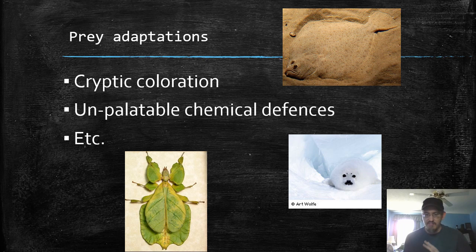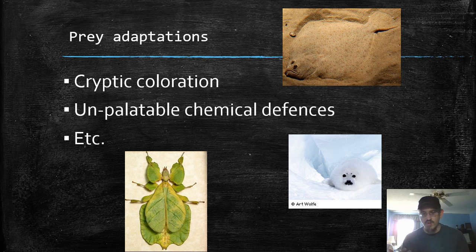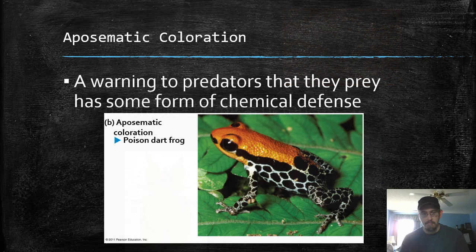Prey adaptations: how have prey reacted to these adaptations by predators? They have cryptic coloration, chemical defenses where they taste bad. Think of a monarch butterfly — it eats milkweed and it tastes horrible to predators. These are adaptations taken on by prey. Prey can also develop defenses like antlers or horns, although those are often used for males to compete with each other for a mate as well.